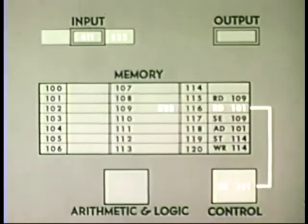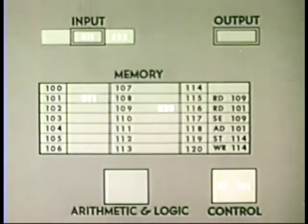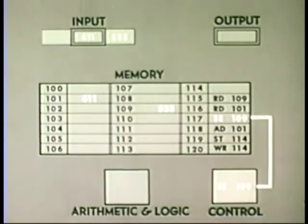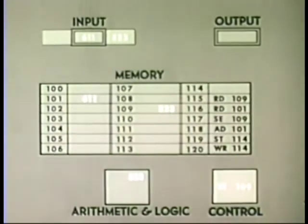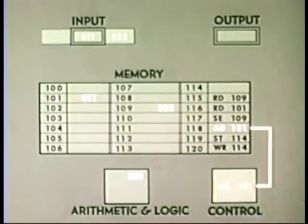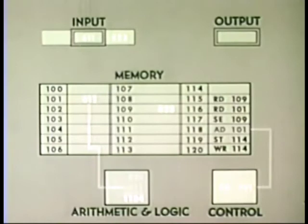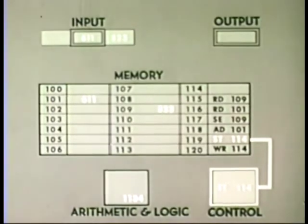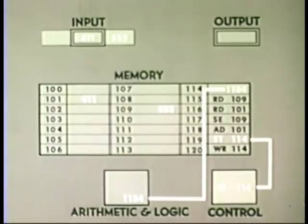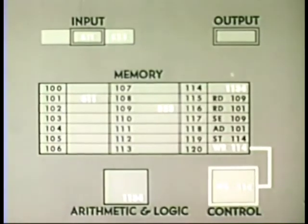The control section now interprets the next instruction read 101 and continues through all the instructions. Send 109. Add 101. Store 114. Write 114.